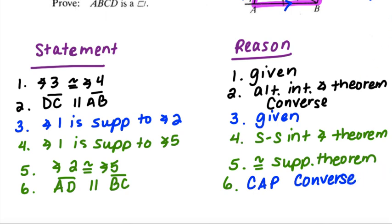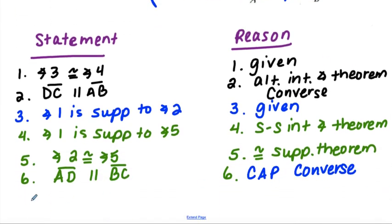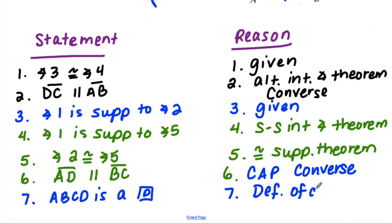So if we've reached our goal, we're ready to state our proof, which is that ABCD is a parallelogram. And that is because of the definition of a parallelogram.